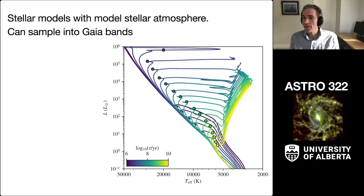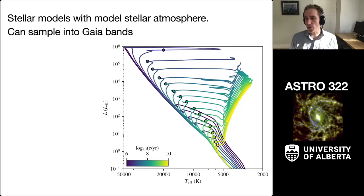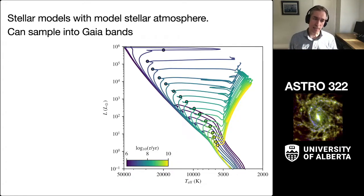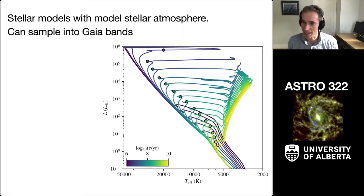We get the figure you see here — a simple stellar model with a theoretical atmosphere laid on top, sampled into the Gaia photometric bands. Each of these tracks is color-coded by the age of the stellar population. If we looked at the stellar population at 1 million years, which would be log t of 6, it would follow that really dark blue curve. And then as we watch this stellar population over time, you would see the stars found along these points — I think of it almost like a wick burning down. It burns down the main sequence, then you populate the red giant branch and so on.